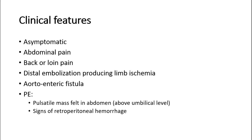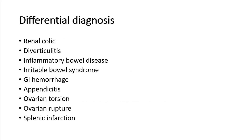On examination, a pulsatile mass can be felt in the abdomen above the umbilical level. Sometimes signs of retroperitoneal hemorrhage may be evident. The main differential diagnosis in patients who present symptomatically is renal colic, due to the presence of back pain with no other symptoms present.